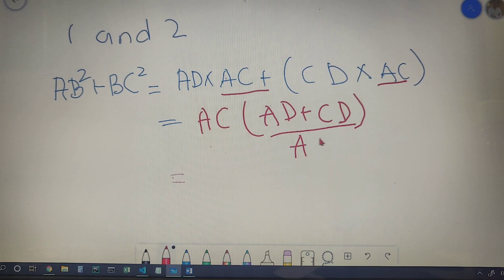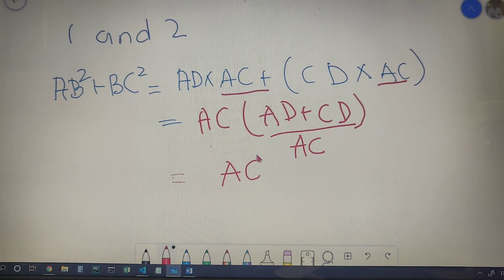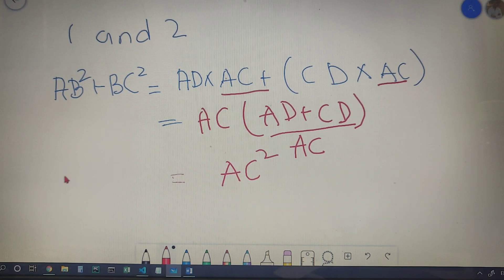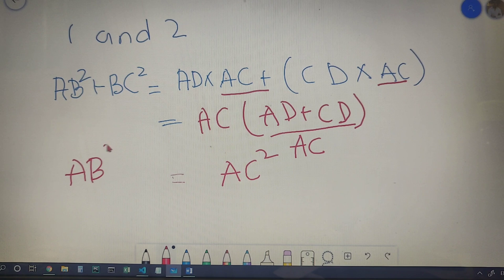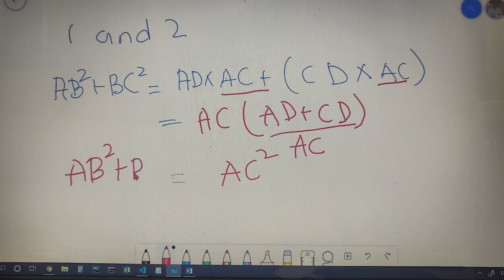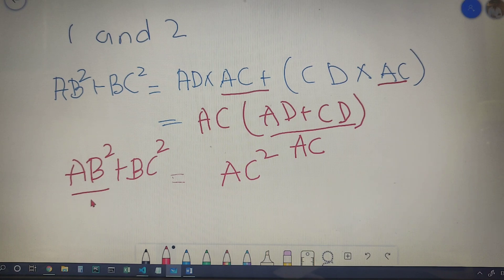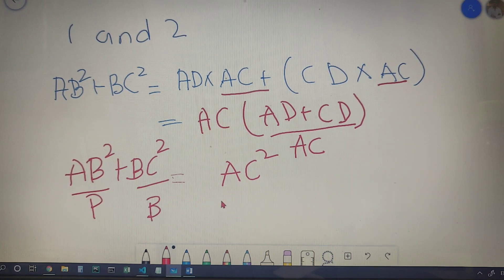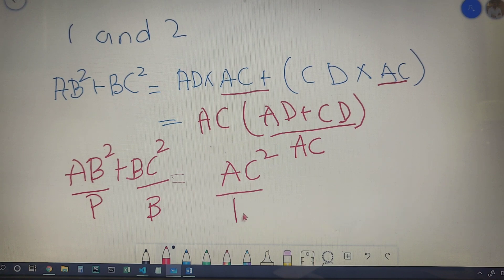So instead of AD plus CD, I can write AC, and I will finally get AC square. Now in the LHS I have AB square plus BC square, and AB was my perpendicular, BC was my base, and AC was my hypotenuse.